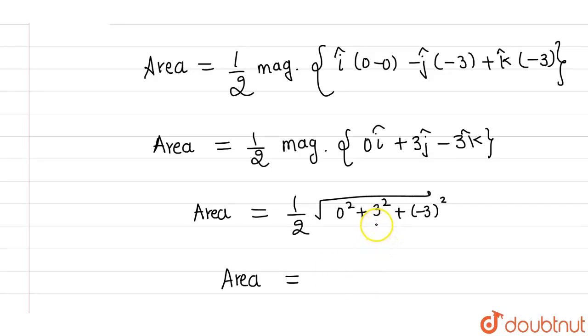this can be written as 9 into 2. And root 9 into 2 is nothing but 3 root 2. So this is 3 root 2 divided by 2 which can be written as 3 by root 2.